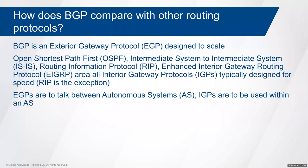Another way to classify routing protocols is exterior gateway protocols versus interior gateway protocols — exterior or interior relative to autonomous systems. An autonomous system is a grouping of routers and networks within the same administrative domain. A provider's network is an autonomous system; a large enterprise would be an autonomous system. We interconnect those autonomous systems through exterior gateway protocols, and the only EGP available today is BGP. Other protocols could be used between autonomous systems privately, but only BGP can scale to internet-level numbers.